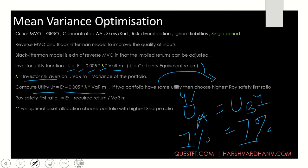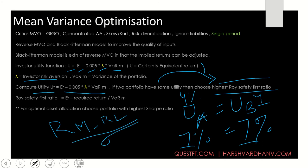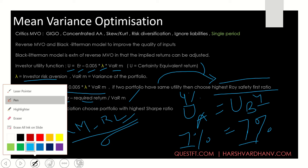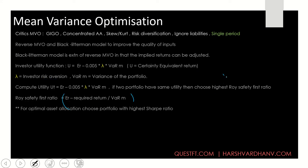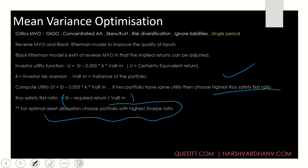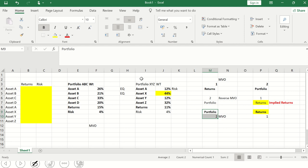When the utility function gives the same result for two portfolios — same utility or same return — the portfolio with the highest Roy's Safety First ratio should be selected. Roy's Safety First ratio is: (expected return minus required return) divided by standard deviation. So the portfolio with the highest Roy's Safety First ratio is selected. For optimal asset allocation, choose the portfolio with the highest Sharpe ratio — this is very important.